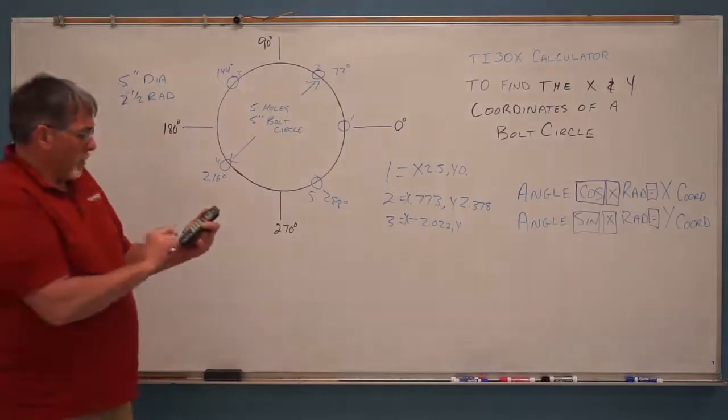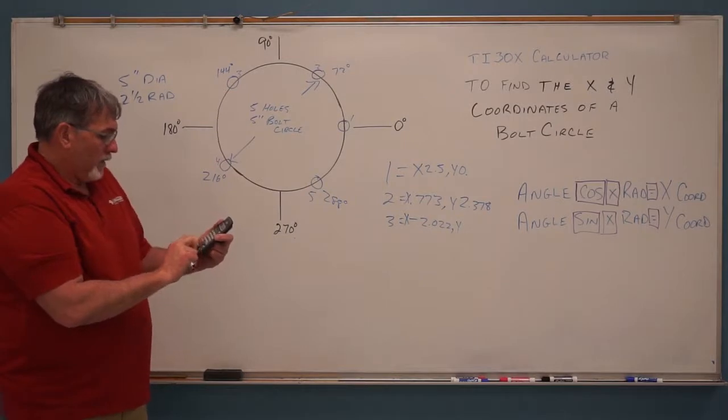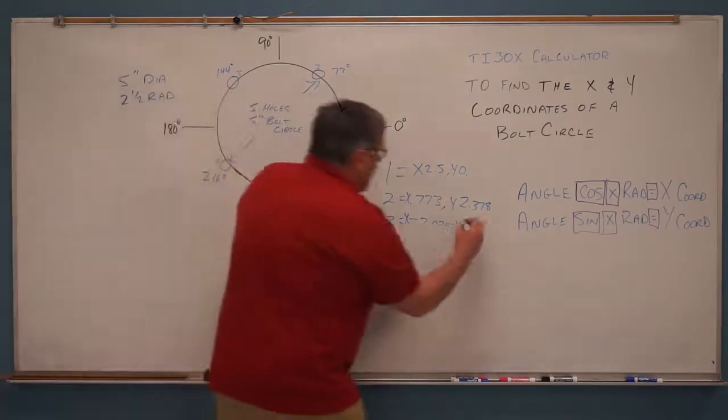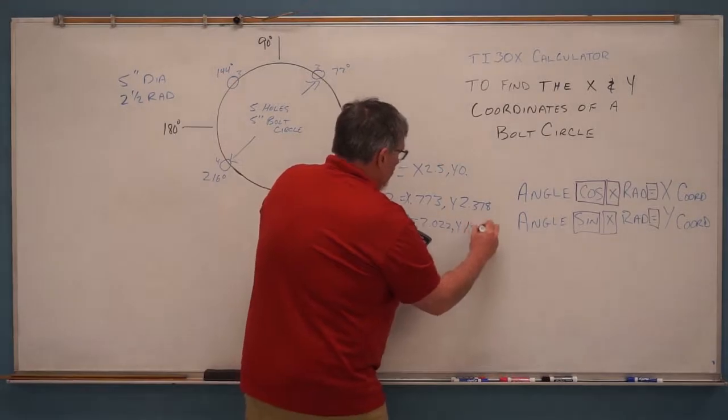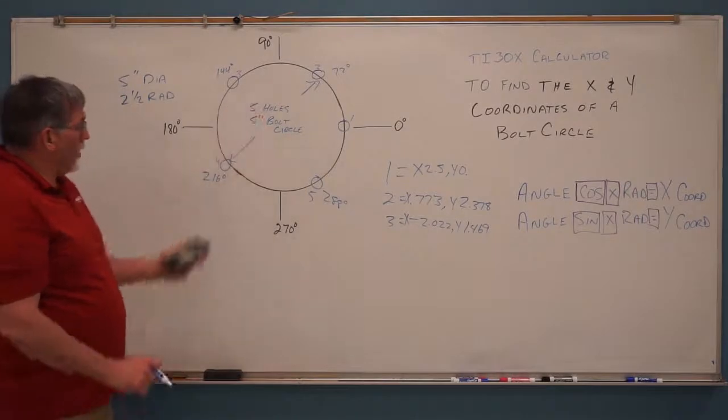And our y-coordinate position will be angle sine, 144 sine times the radius of 2.5 equals a y-positive of 1.469. So that's how we find these.